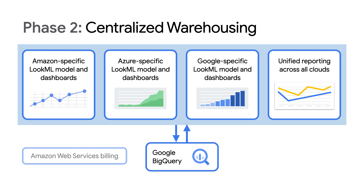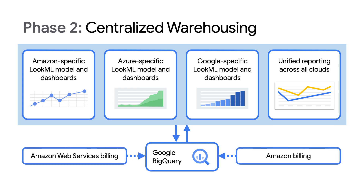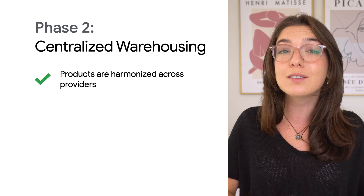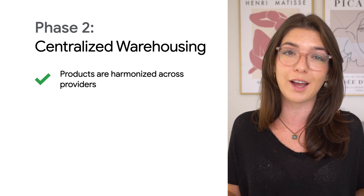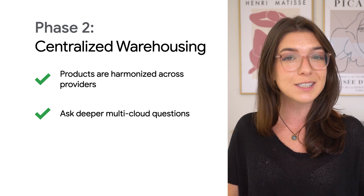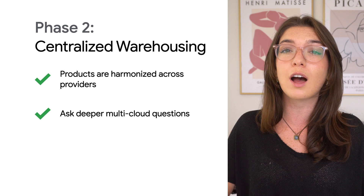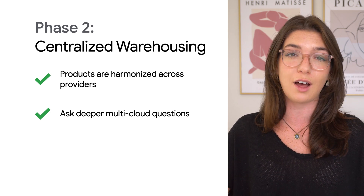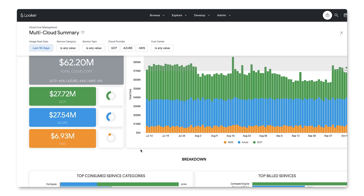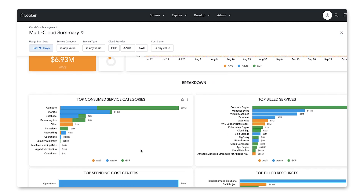In phase two, companies work with Looker and partners to centralize data in BigQuery so that all cloud billing information is stored in a central location. Phase two allows you to ask deeper questions of your data because billing SKUs and services are harmonized across providers. So instead of looking at macro trends like total spend for each provider, you can drill in to see specifics — for example, if you're spending more on machine learning specifically on Google, Amazon, or Microsoft. Because data from each cloud is centralized into a single data warehouse, you're able to compare spend across specific services and SKUs.